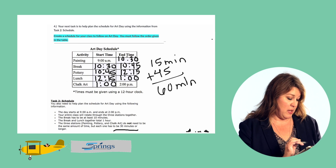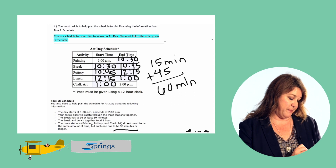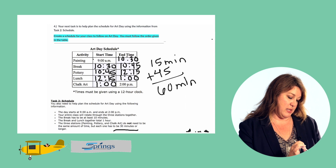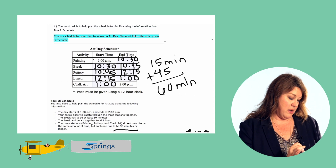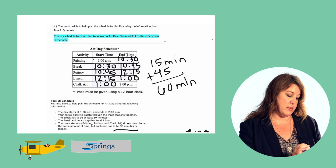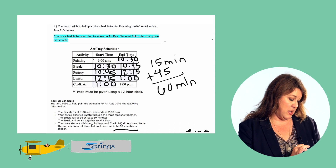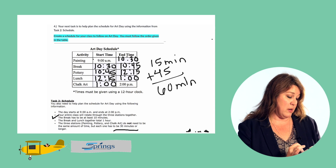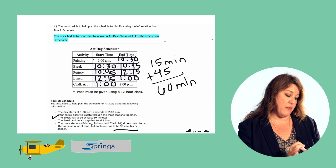Let's go back and check our work and make sure we've followed the plan. The day starts at nine and it ends at two. The entire class rotates through the three stations together — check. The break has to be at least ten minutes; we have a break from ten thirty to ten forty-five, that's fifteen minutes — check. The break and lunch together total one hour: the break is fifteen minutes, lunch is forty-five minutes, so combined it's one hour — check.